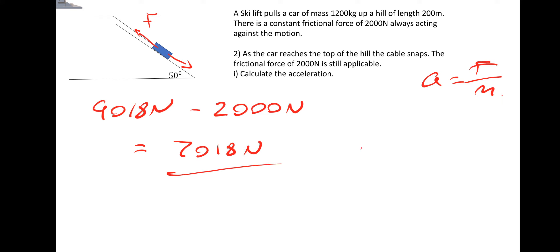Only this time, they're acting in opposite directions. So we need to do the 9018 and this time subtract the 2000 Newtons. That gives us a force, a resultant force for our acceleration equation, of 7018 Newtons. So the acceleration would be the resultant force, which we just calculated to be 7018 Newtons, divided by the mass of 1200 kilograms, which gives us an acceleration of 5.84 meters per second squared.